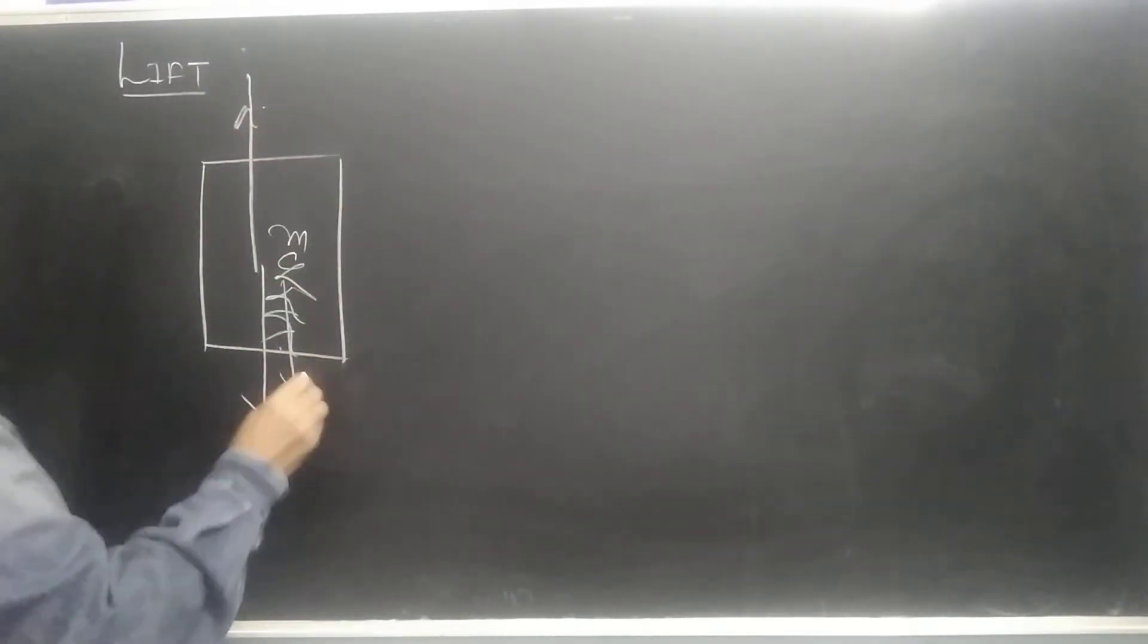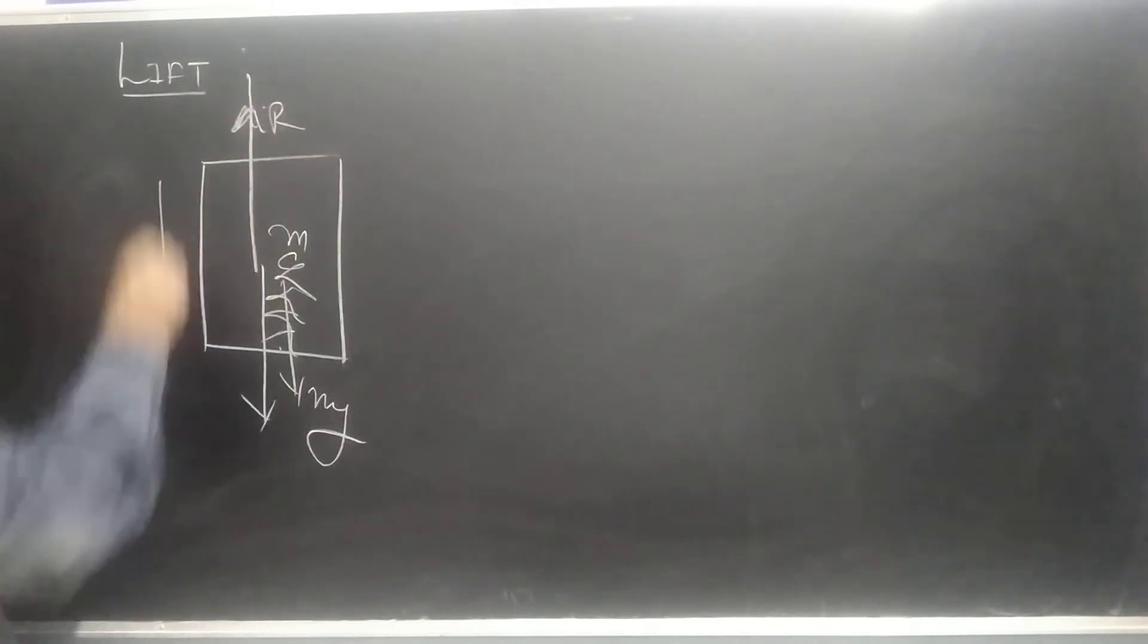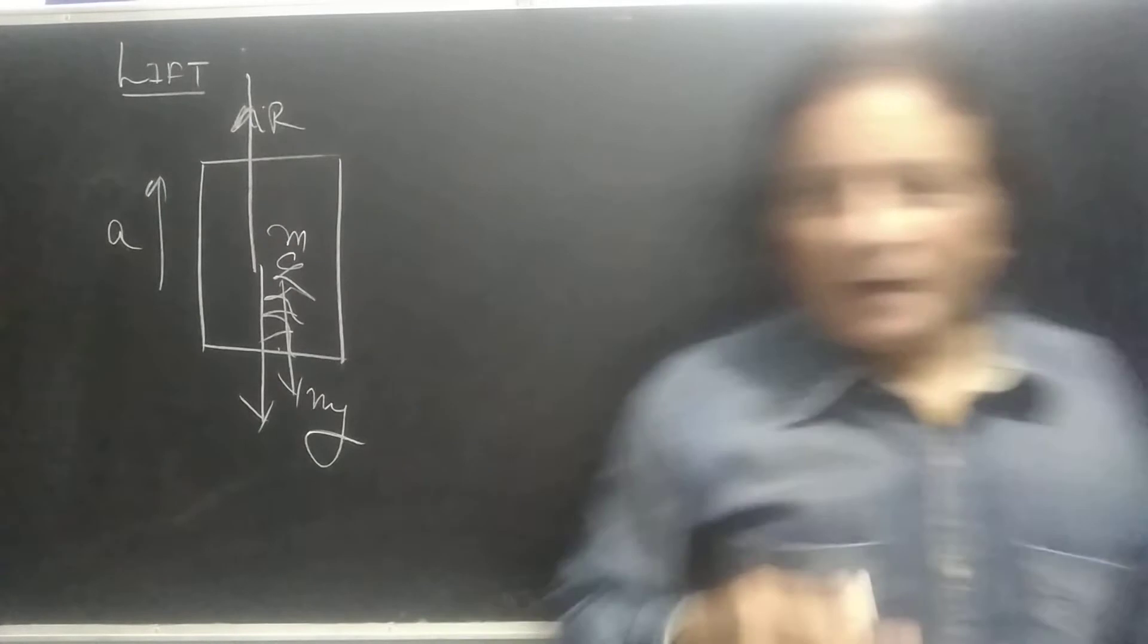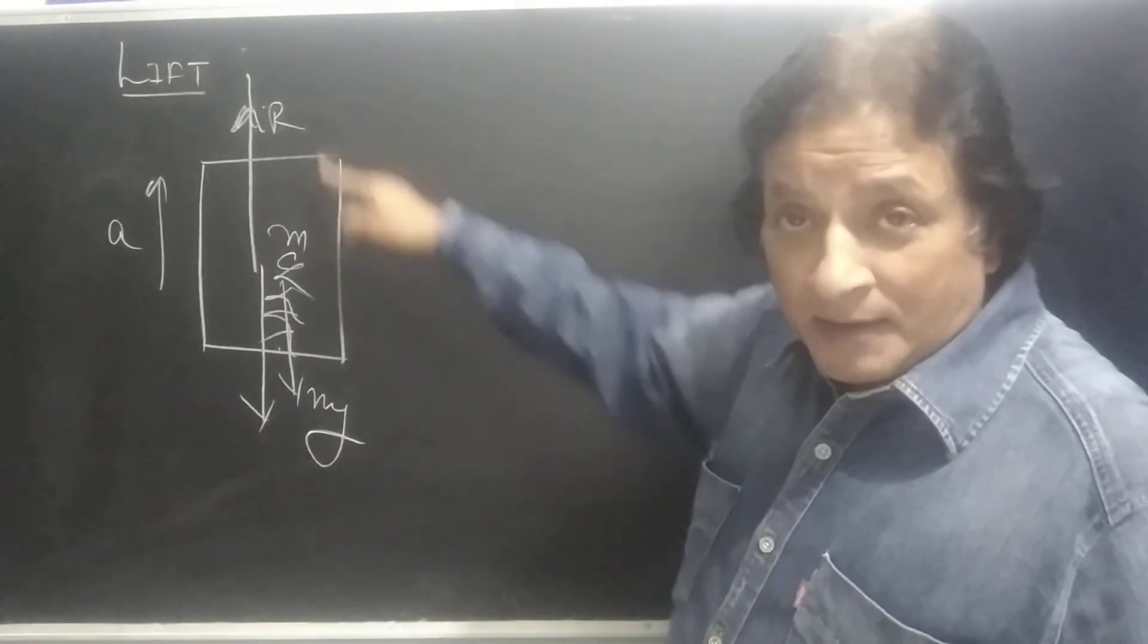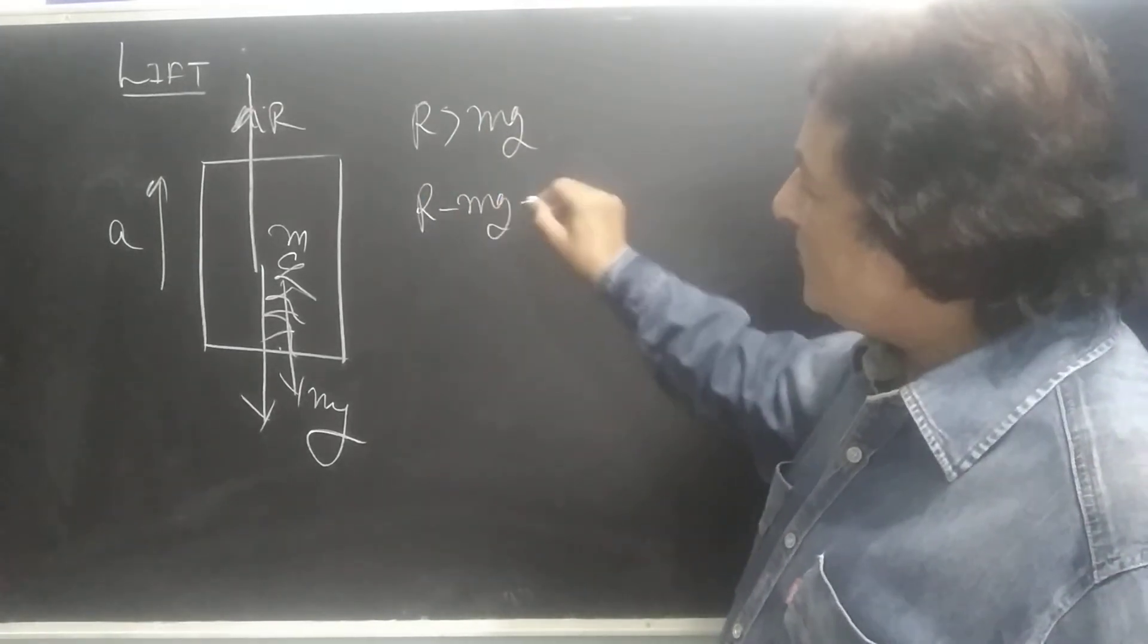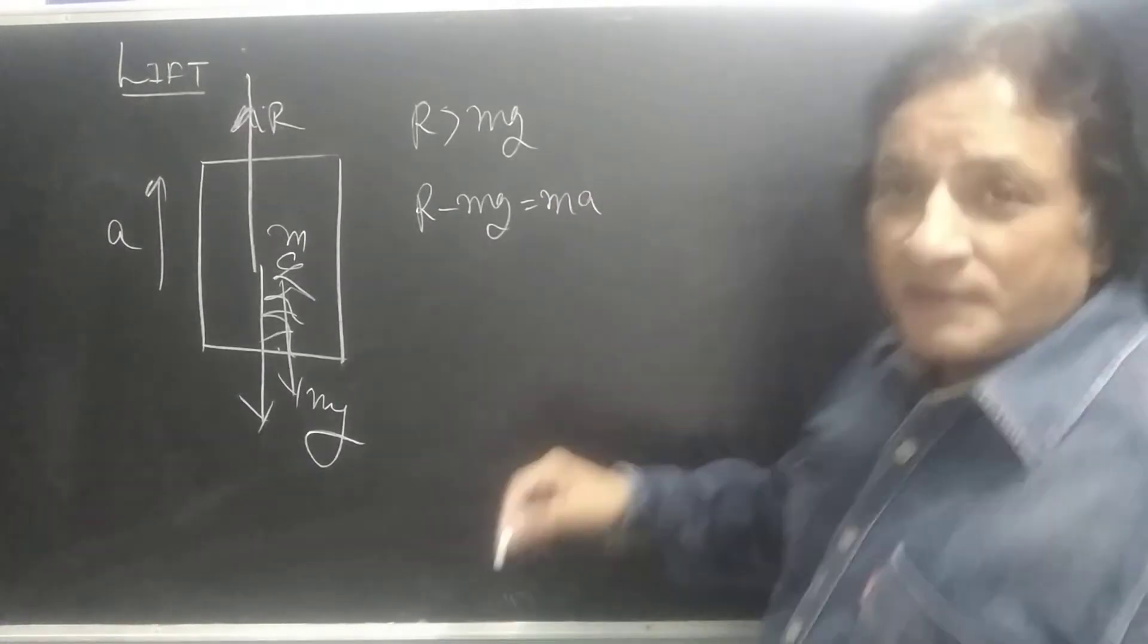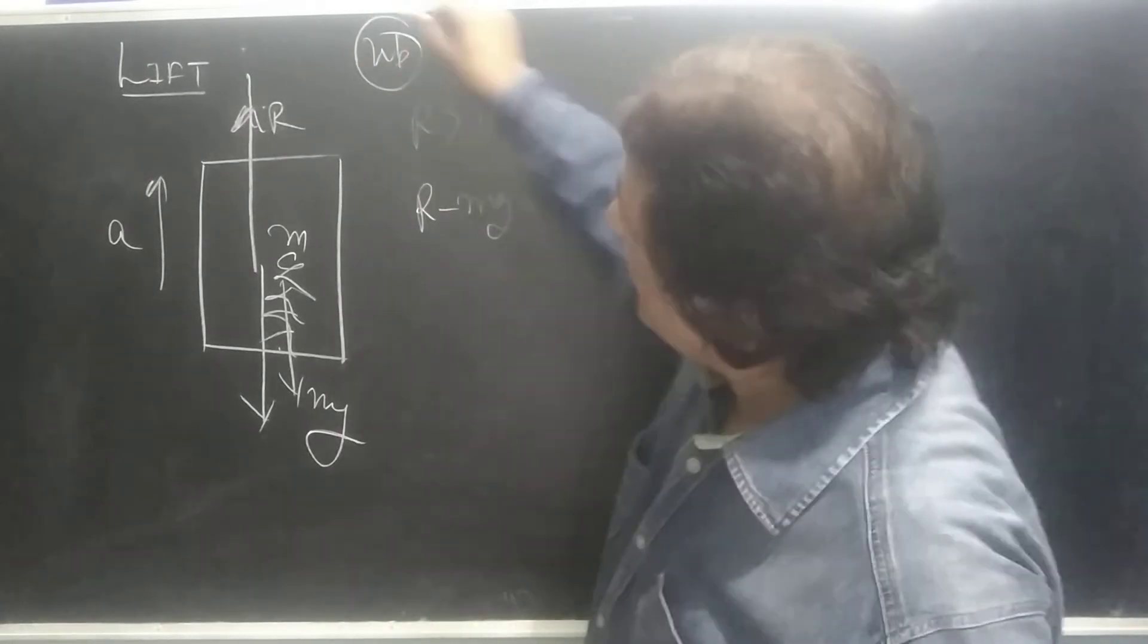The weight is down and the normal reaction is up. The acceleration is up. If this is up, then which force will take up? The normal reaction. So R should be greater than Mg. So R minus Mg is equal to MA. We are studying which case? When the lift is going up.